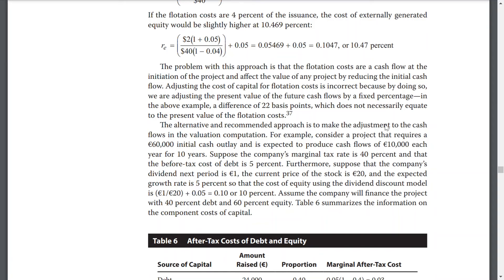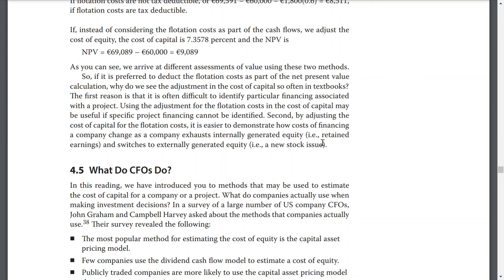The alternative — our recommended approach — is to make adjustments to the cash flows in the valuation computation. For example, consider a project that requires a $60,000 initial cost outlay and is expected to produce cash flows of $10,000 each year for 10 years. Suppose the company's marginal tax rate is 40%, the before-tax cost of debt is 5%, the dividend next period is €1, the current stock price is €20, and the expected growth rate is 10%. Table 6 summarizes the capital information. It is preferred to deduct flotation costs as part of the net present value calculations. Why do we see adjustments in the cost of capital so often in textbooks? First, it is often difficult to identify the particular financing associated with a project. Second, by adjusting the cost of capital for flotation costs, it is easier to demonstrate how cost of financing changes as the company exhausts internally generated equity and switches to externally generated equity.